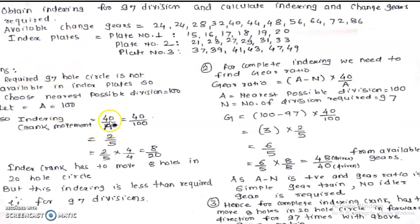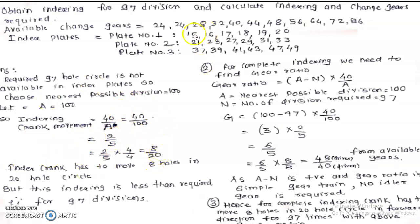So the indexing crank movement is 40 divided by the assumed number 100, which gives 2/5. Now 2/5 must be multiplied by a factor so that the denominator corresponds to a whole circle available in plate 1, 2, or 3. Multiplying by 4/4 gives 8/20, and 20 is available in plate number 1. Alternatively, multiplying by 3/3 gives 6/15, and 15 is also a whole circle in plate number 1.